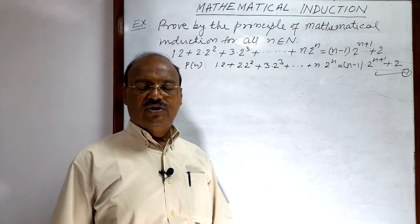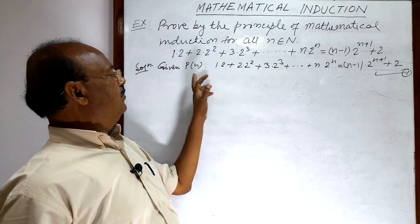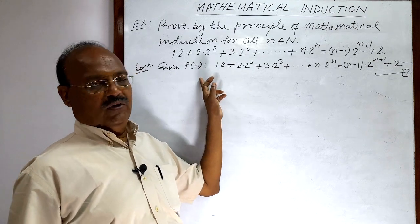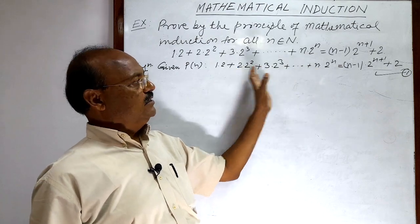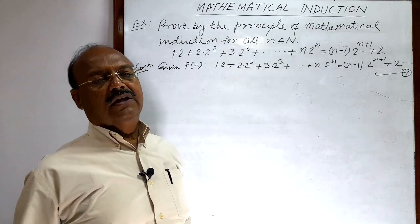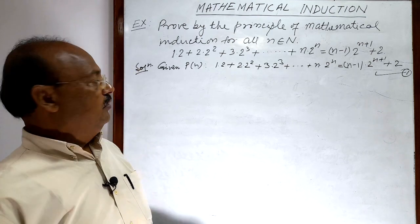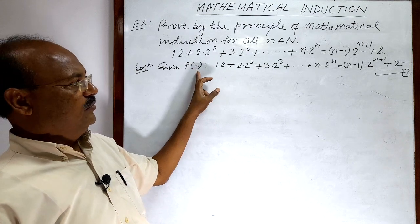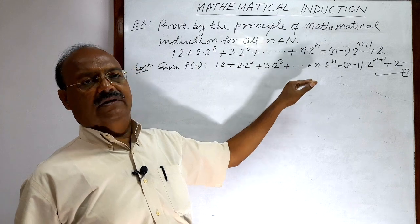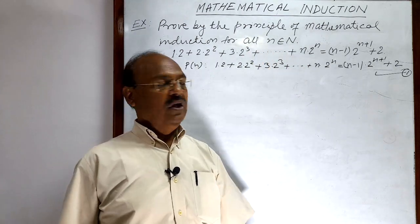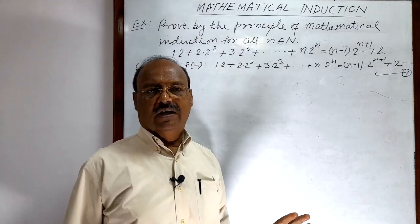Second step: we have to assume that P(r) is true. We get P(r) by putting n = r in relation number 1, and we assume that the statement is true for n = r. Third and last step: we have to show that P(r+1) is true. After doing all three steps, we write a concluding statement that P(n) is true for all n.